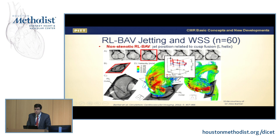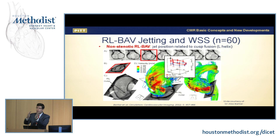These are bicuspid aortic valves that do not even have stenosis. The intrinsic nature of the valve opening creates an abnormal flow profile. This creates an additional mechanical push to the aorta that may contribute, in part, to the development of aortopathy.